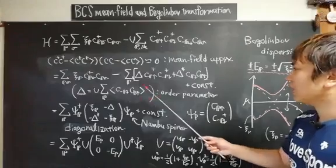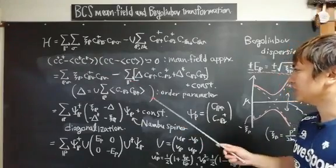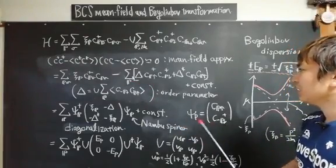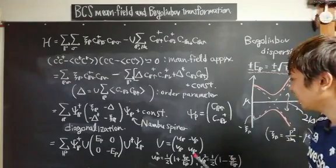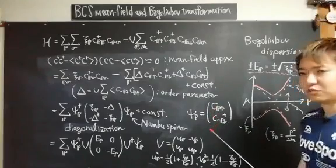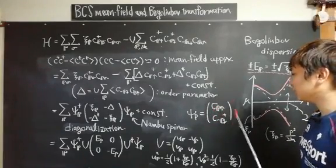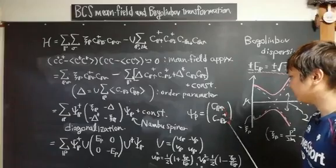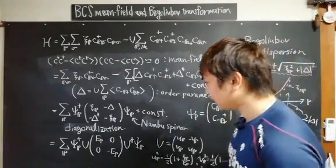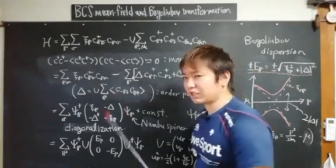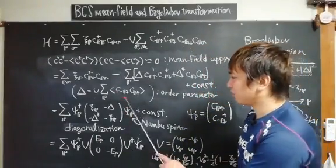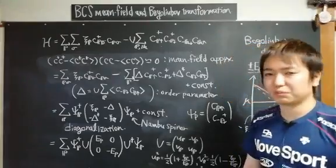So then this mean field Hamiltonian is now written by this Nambu spinor, a combination of the annihilation and creation operator of up-spin and down-spin. So this is a vector, and the Hamiltonian is now described by a two-by-two matrix representation.